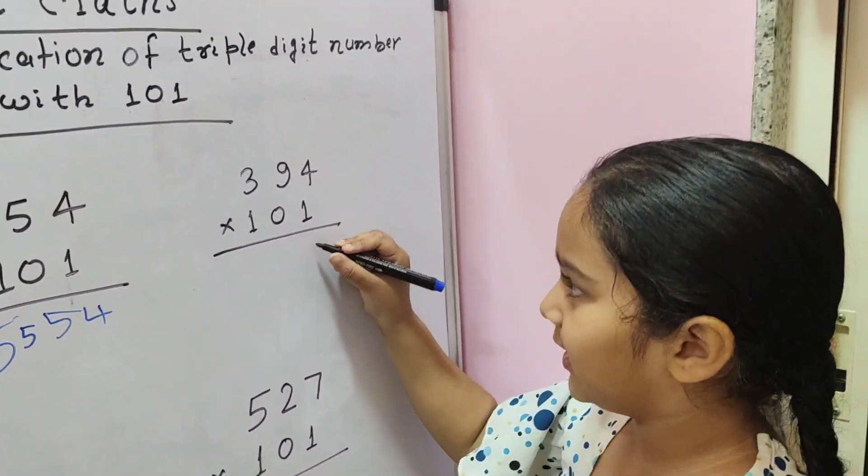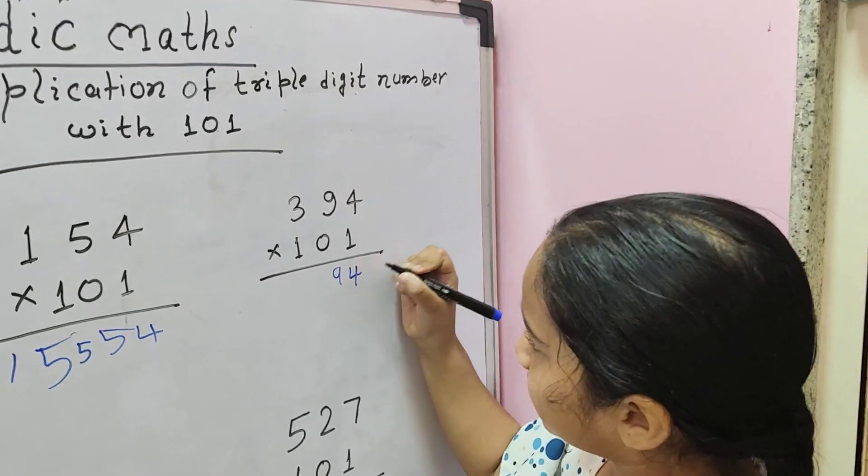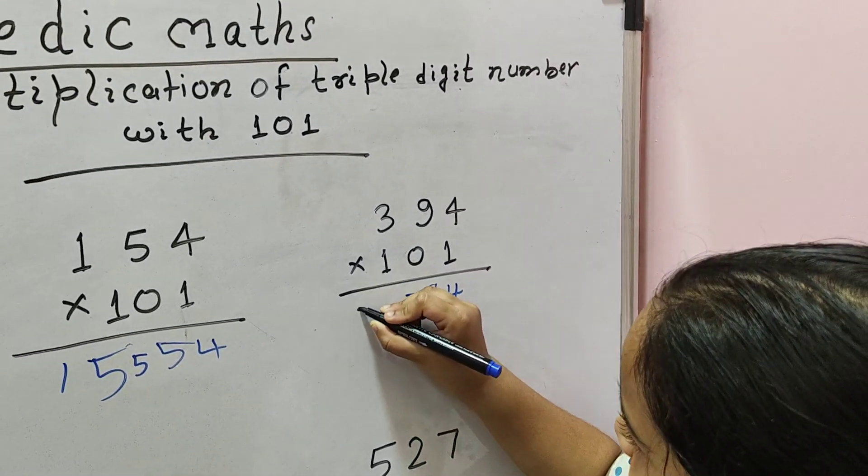So now we'll do this one. We'll write 94, 3 plus 4 is 7, then 39.